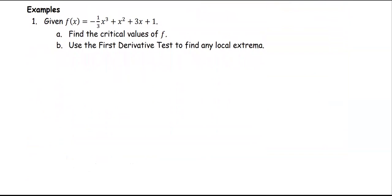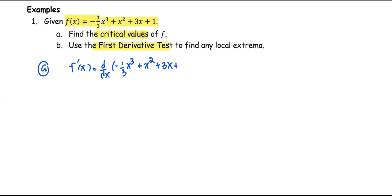Let's see this example. f(x) equals negative 1/3 times x cubed plus x squared plus 3x plus 1. We're going to find the critical values of the function f, then use the first derivative test to find any local extrema. First, to find the critical value, we find the derivative: f'(x) equals negative 3/3 x squared plus 2x plus 3, which simplifies to negative x squared plus 2x plus 3.